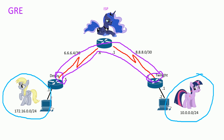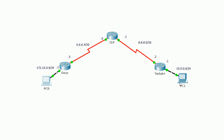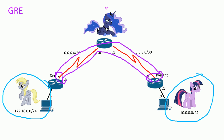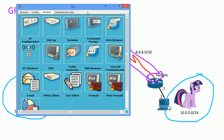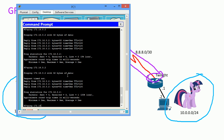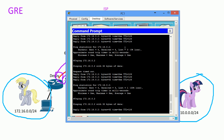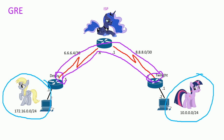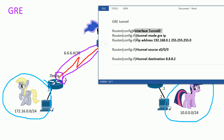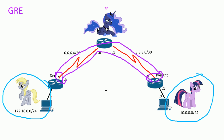We've set up GRE — a tunnel between these two routers over the public IP network — and used EIGRP to share Twilight's network and Derpy's network, so now they can communicate with each other. Let's ping from Twilight's side: ping 172.16.0.x — and it works the other way too. Quick recap: make a tunnel interface, put it in tunnel mode GRE, set an IP address for the tunnel, then set source and destination on the public network. That was basically it — I hope this was helpful, thank you for watching.